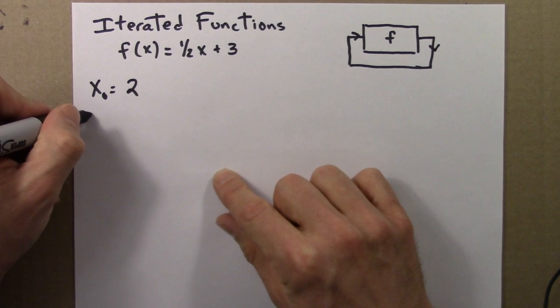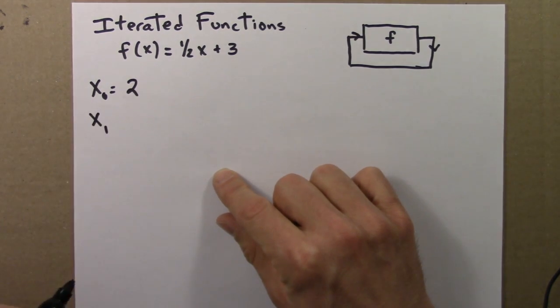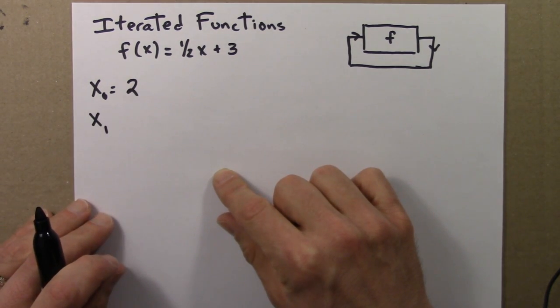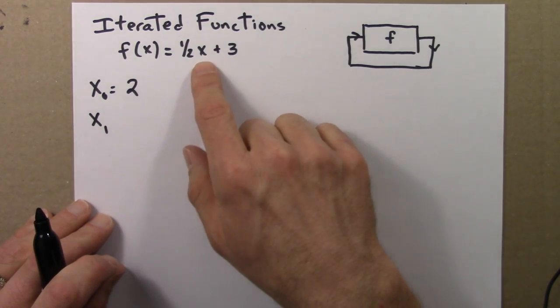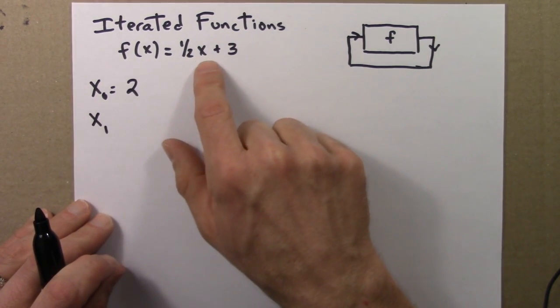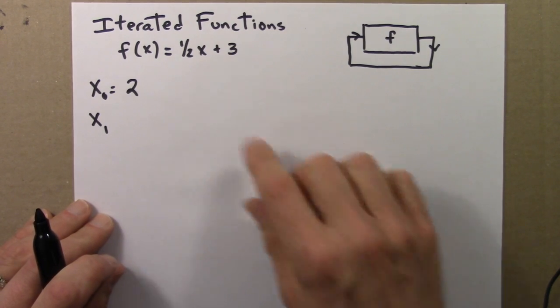Then what's the first iterate? Well, I need to apply the function to the number. So half of 2 is 1, 1 plus 3 is 4.